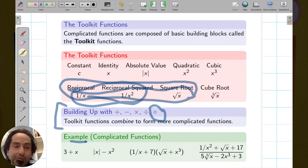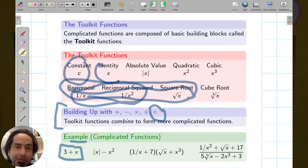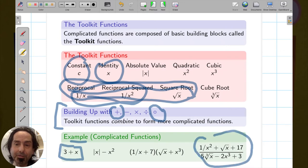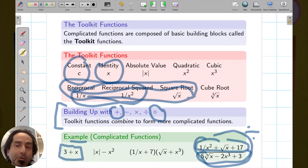And so as an example, notice that this first one, 3 + x, that's just a constant function plus the identity function. So it's combined with plus. All the way to here's something more complicated. You can see that there's a ratio. So we're dividing two functions. There's the numerator at the top and the denominator. And each of those are just combinations of more basic functions using the arithmetic operations. So that's an important way to think about functions that are given by formulas.